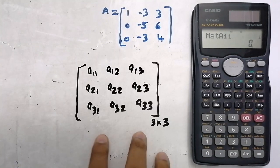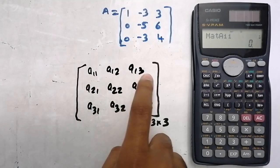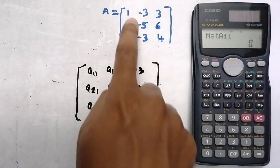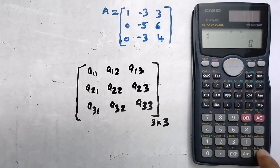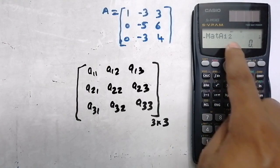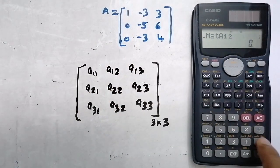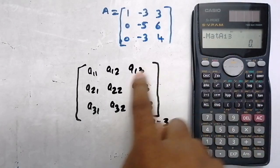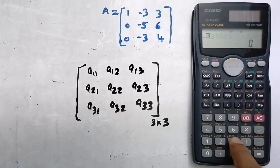Now they are asking for the elements. This is the general representation of a 3×3 matrix. The first row, first element A11 is 1 — press 1 then Equal. Then A12, the second element, is minus 3 — press minus 3 then Equal. Then A13, the third element, is 3 — press 3 then Equal.